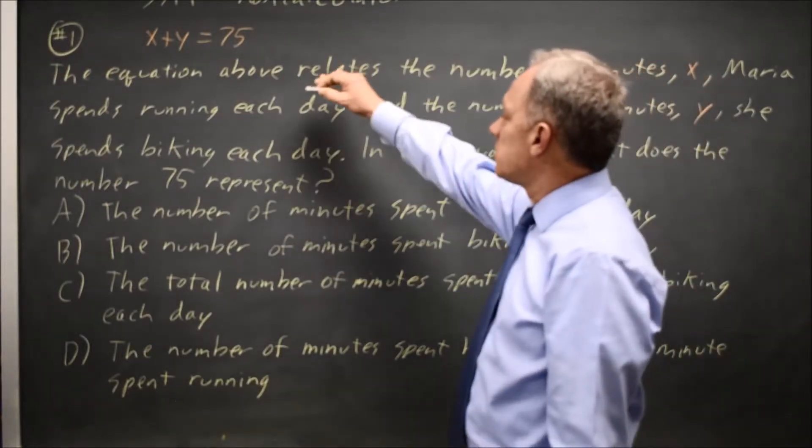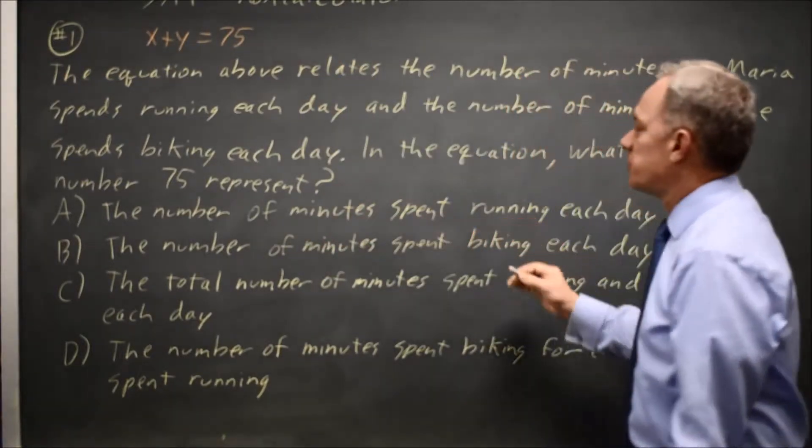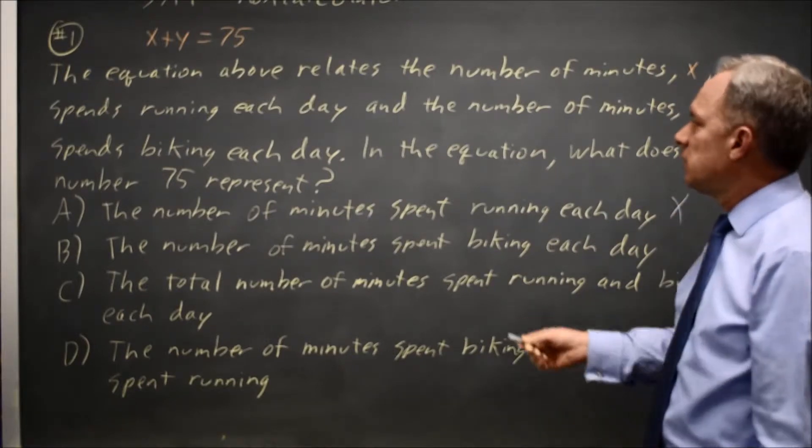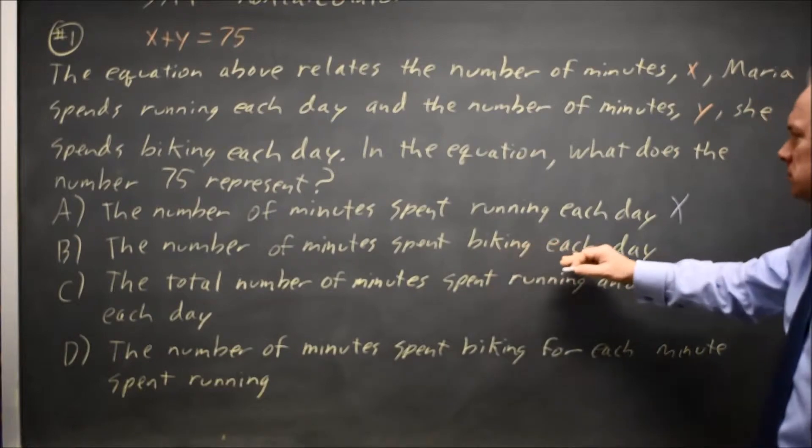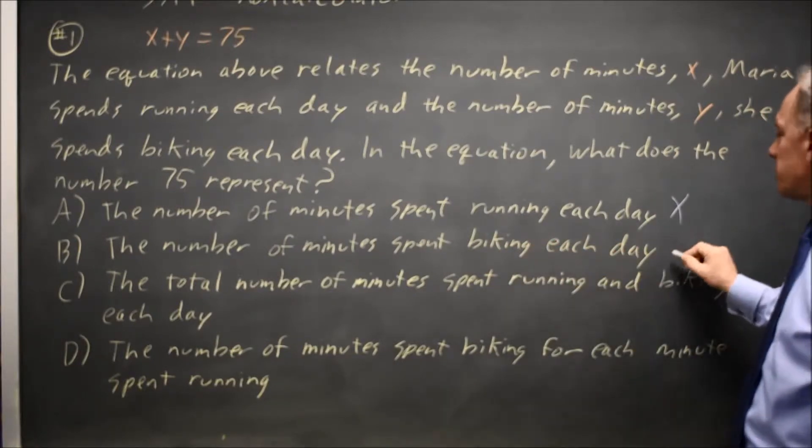If they said x = 75, that would represent the number of minutes spent running each day, but that's not what they said. If they said y = 75, that would represent the number of minutes spent biking, but that's also not the case.